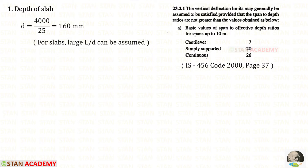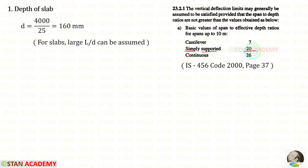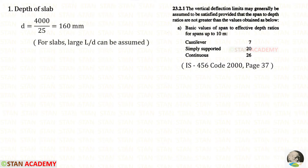The first step is to find the depth of the slab. In IS 456 code book page number 37, we can find the span to depth ratios. For simply supported it is given as 20. These values are actually for beams, but according to this code book we can use them for slabs also. For slabs, large L upon D can be assumed, so instead of 20 I have assumed 25.